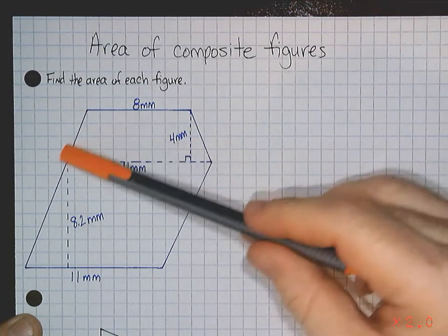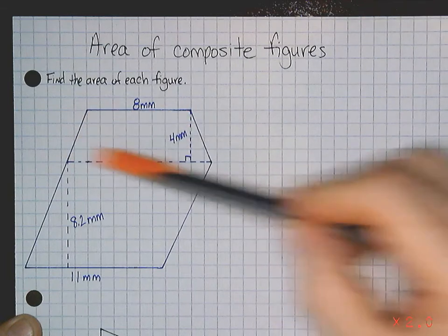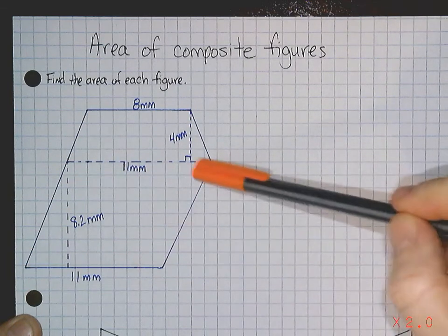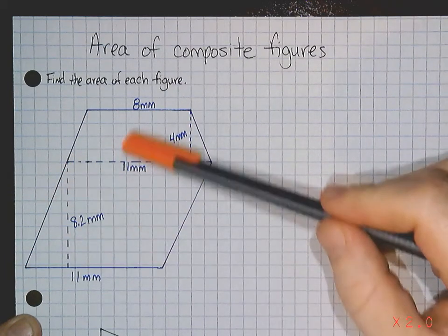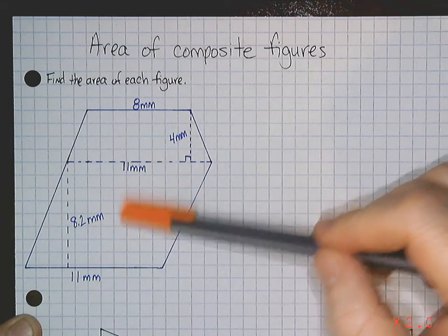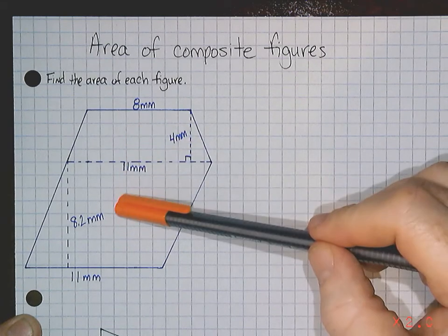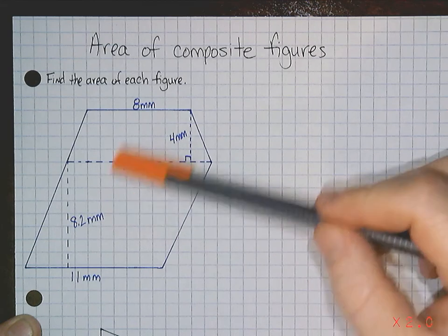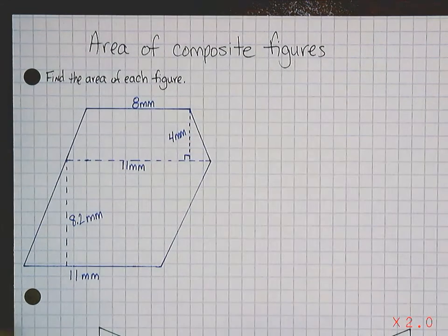If you look at this one, it's actually a trapezoid on top of a parallelogram. So you need to know two formulas: What's the area of a parallelogram, and how do you find the area of a trapezoid?